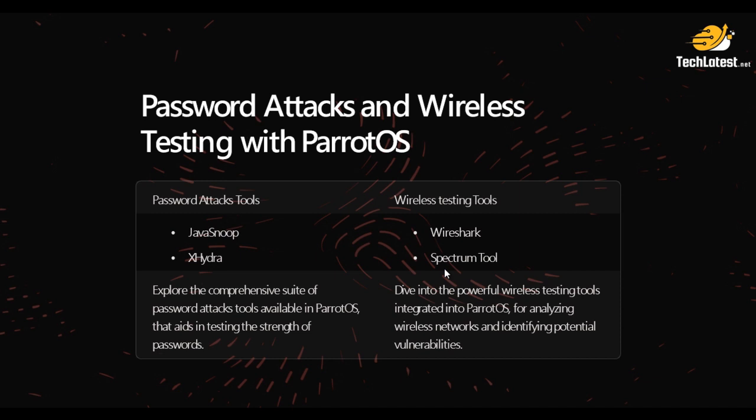Now let's shift our focus to wireless testing. This involves assessing the security of wireless networks to identify vulnerabilities such as weak encryption, misconfiguration, and unauthorized access points. Paradox provides tools like Aircrack-ng for conducting wireless testing, allowing us to capture and analyze wireless traffic, crack WEP and WPA/WPA2 passwords, and detect rogue access points.